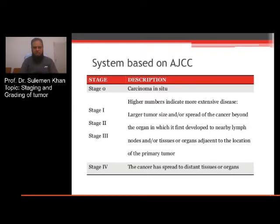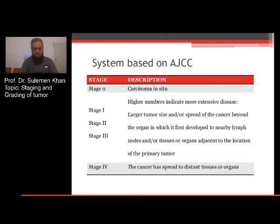Another system of staging is based on the AJCC. Stage 0 is carcinoma in situ; higher numbers indicate more extensive disease. Stage 1 involves larger tumor size or spread of cancer beyond the organ in which it first developed to nearby lymph nodes. Stage 3 involves nodes, tissues, or organs adjacent to the location of the primary tumor. Stage 4 means the cancer has spread to distant tissues or organs.